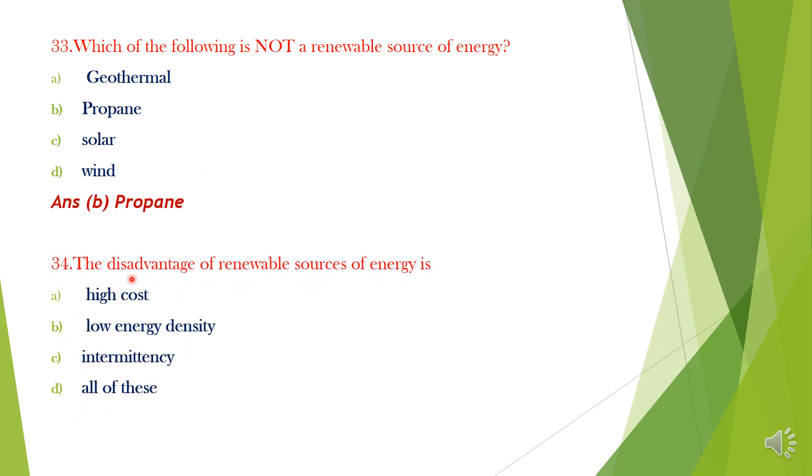Question 34. The disadvantage of renewable source of energy is: A. High cost, B. Low energy density, C. Intermittent, D. All of this. Option D, All of this is the correct answer.